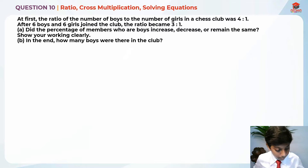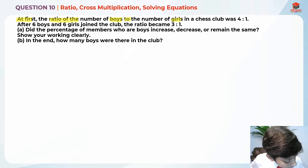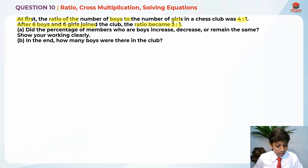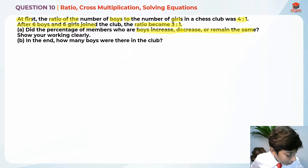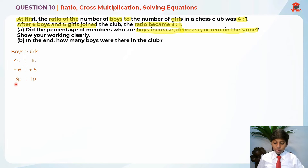Let me highlight the key information. At first, the ratio of boys to girls was 4 is to 1. After 6 boys and 6 girls joined the club, the ratio became 3 is to 1. So boys to girls is 4 units to 1 unit at first. After that, there were 6 boys and 6 girls joining, and it became 3 parts to 1 part.